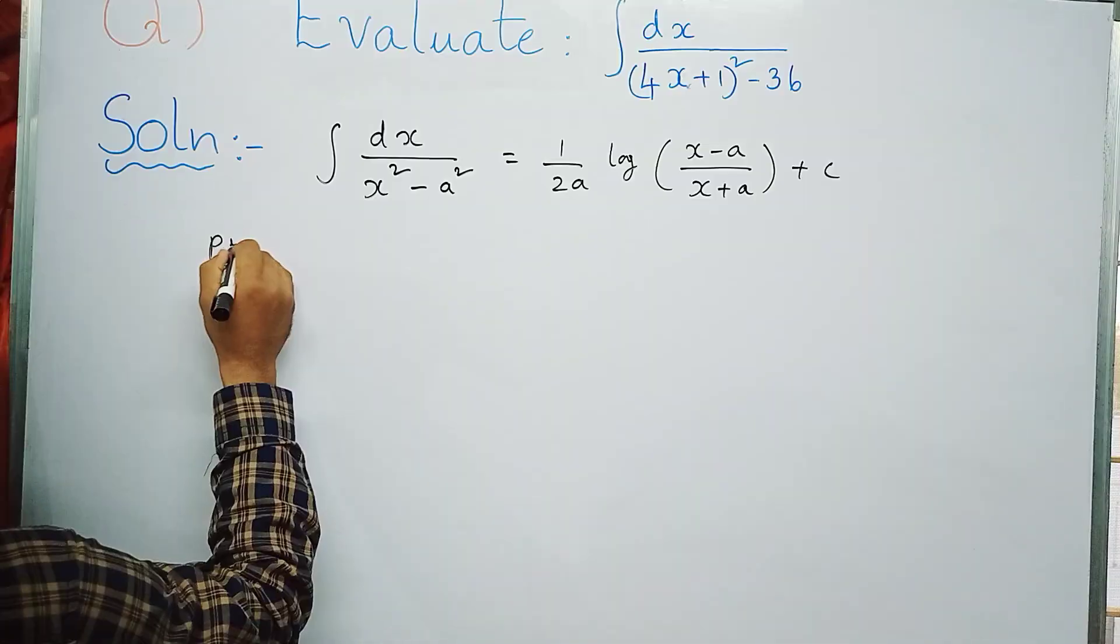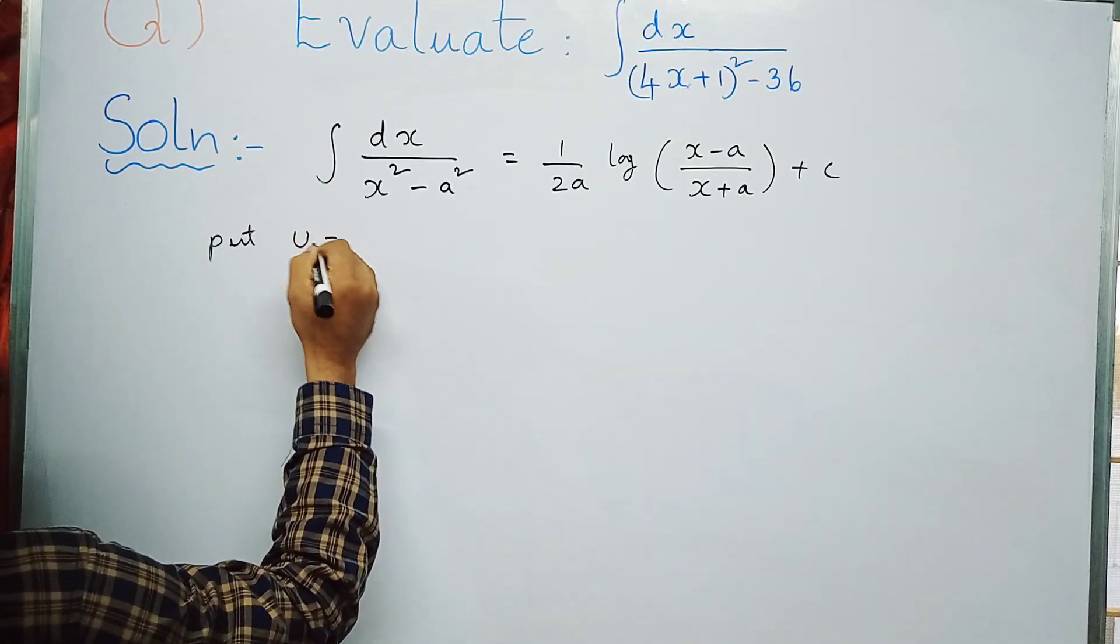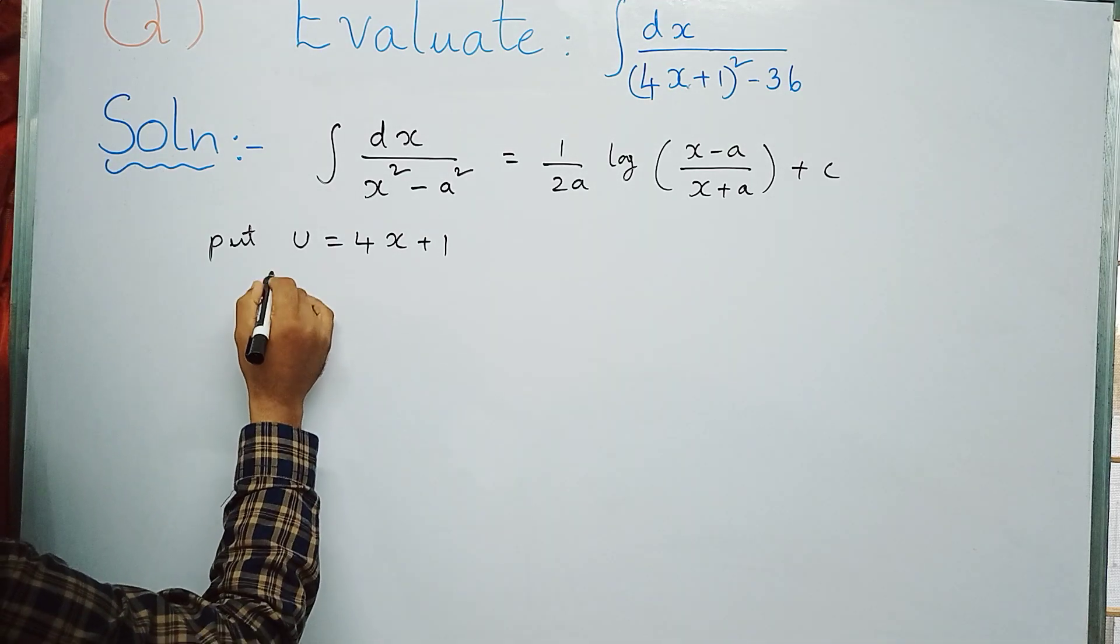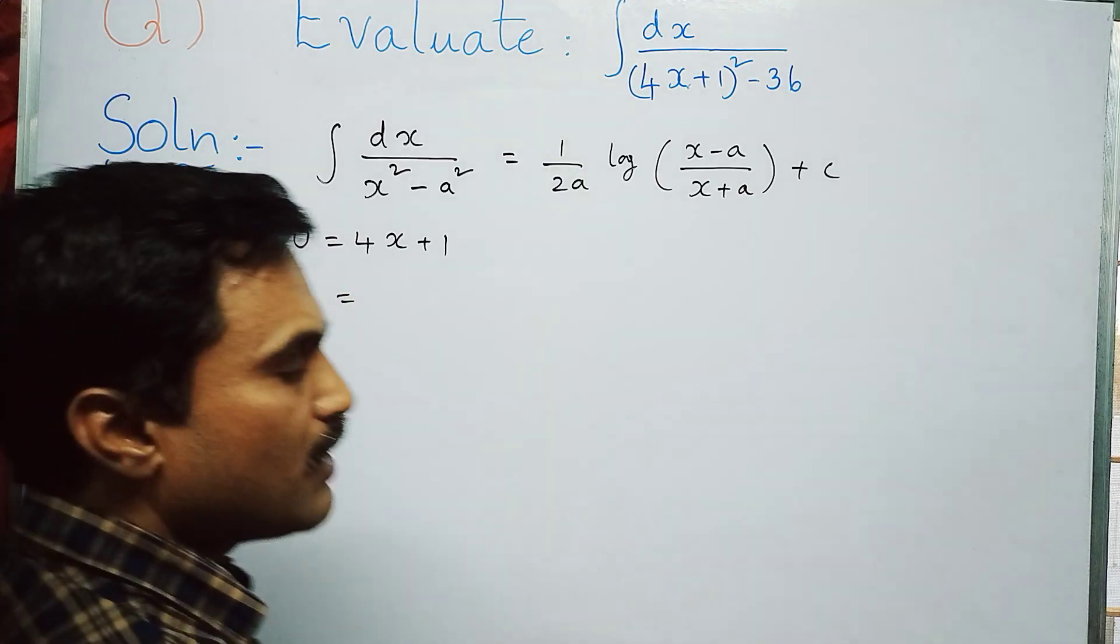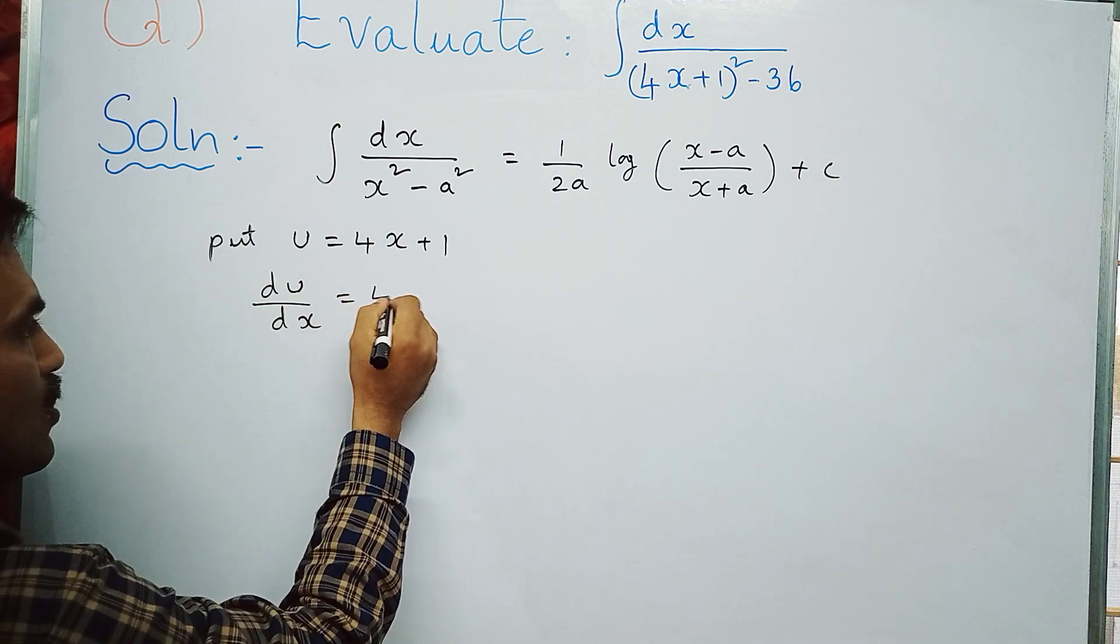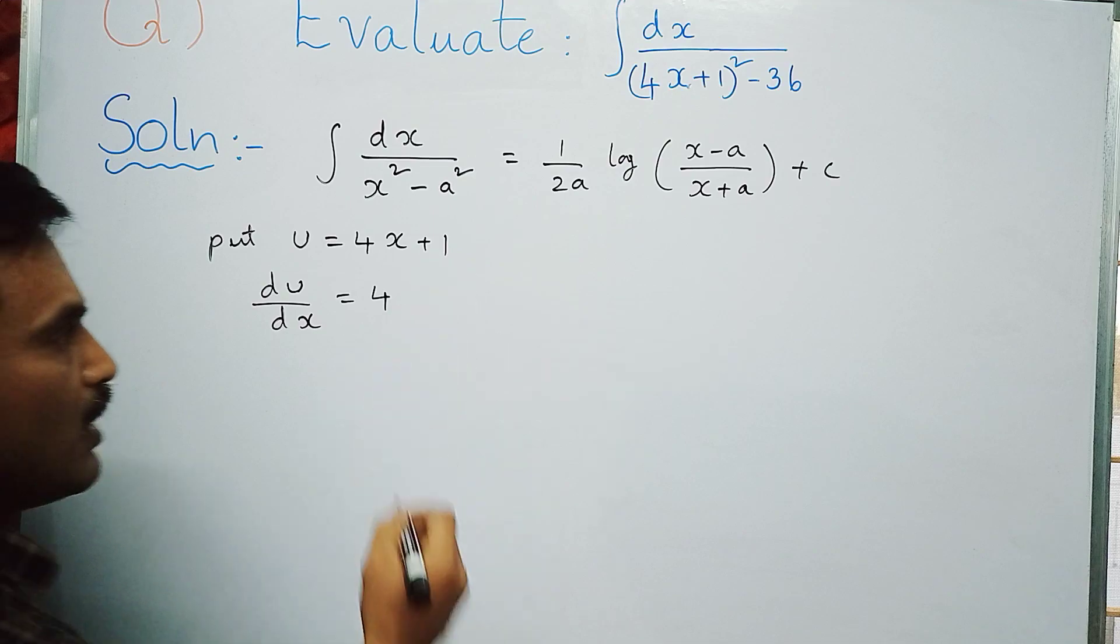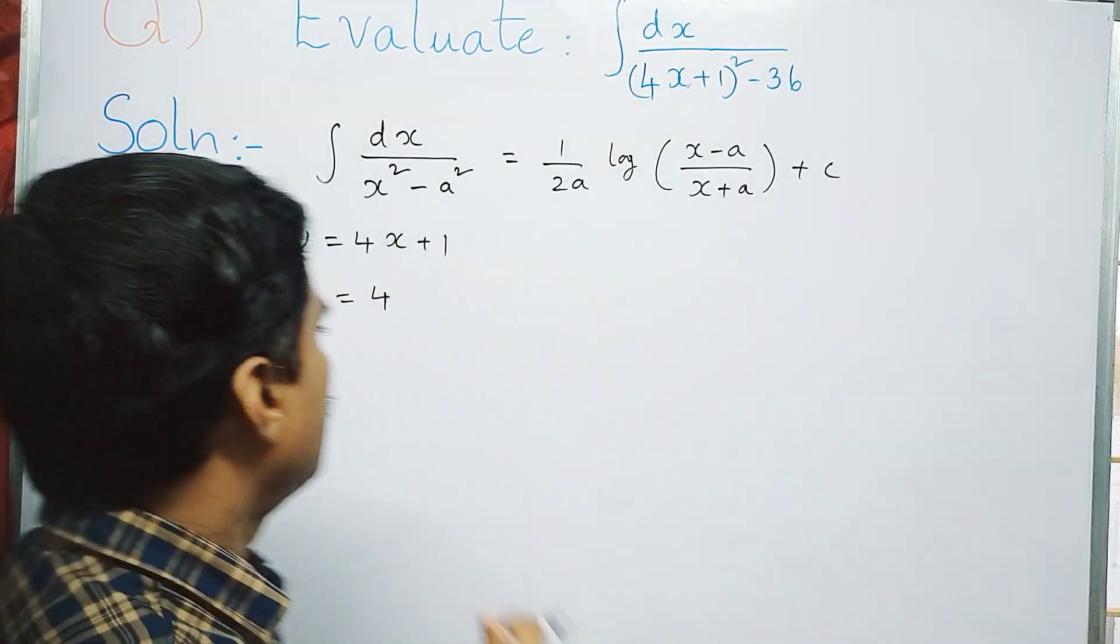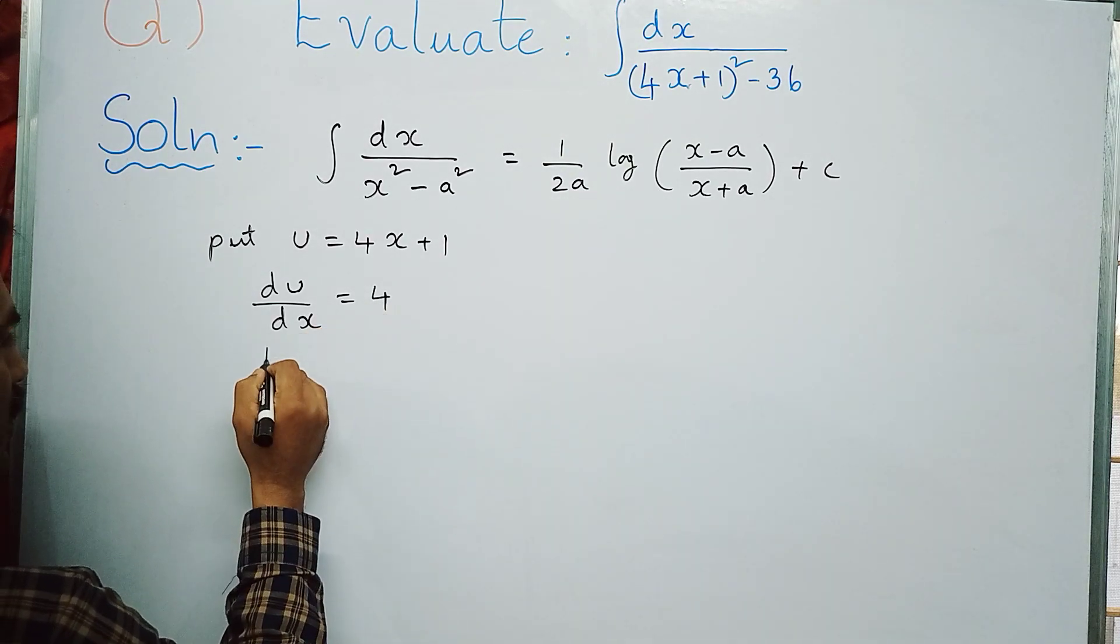Put u = 4x + 1, and then differentiate on both sides. You will get left hand side du by dx equal to right hand side, apply differentiation on 4x. 4 is a constant, so 4 times d by dx of x is 1, plus 1 is a constant so derivative is 0. So du by dx will be 4. Therefore, du equals 4dx, or 1 by 4 du equals dx.